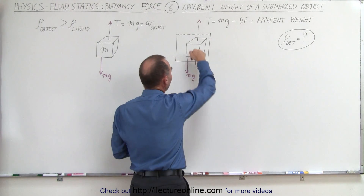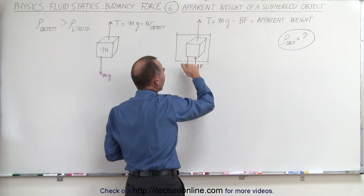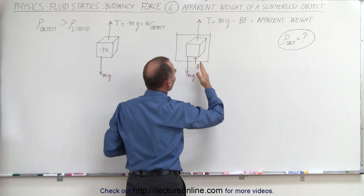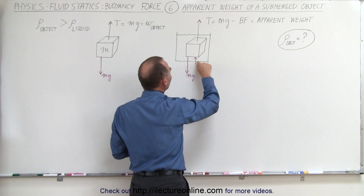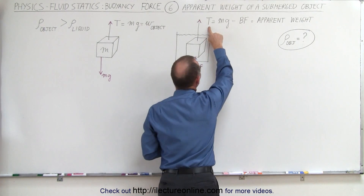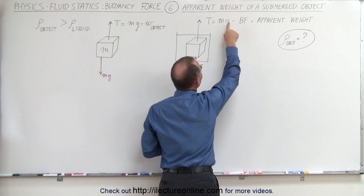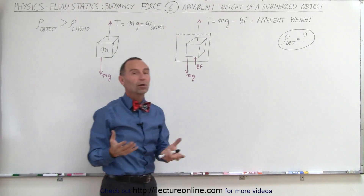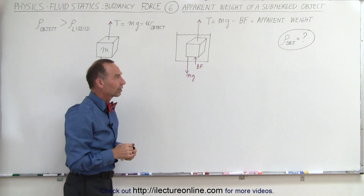Less by the amount of the buoyancy force. In other words, we still have the weight of the object falling down, but now we have a buoyancy force pushing up, and the tension is now going to be the difference between those two forces. The tension equals the weight of the object minus the buoyancy force, and that becomes what we call the apparent weight of the object.